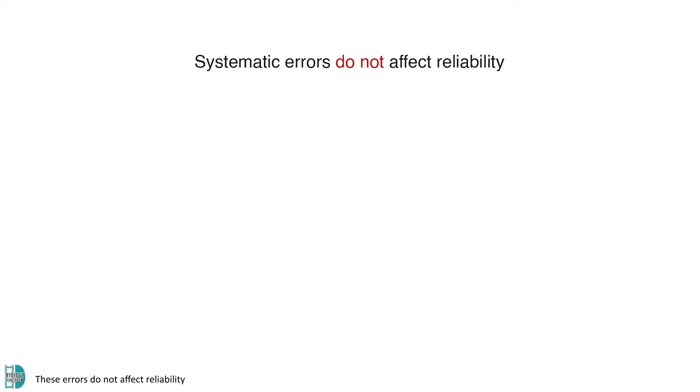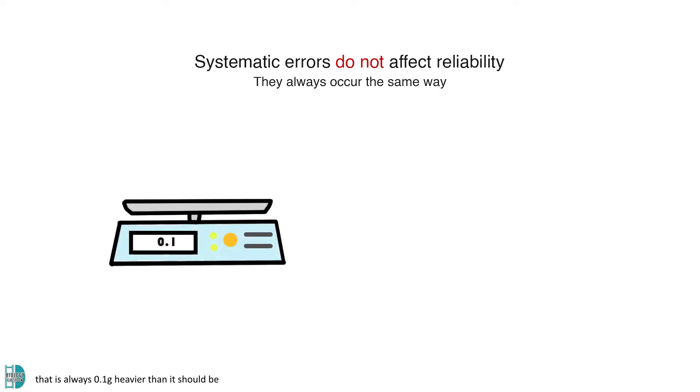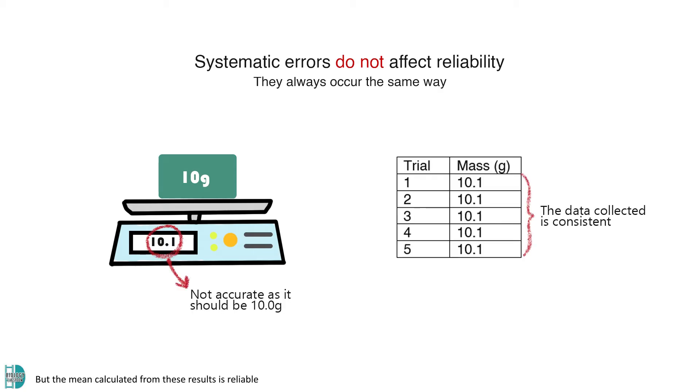These errors do not affect reliability since they always occur the same way. For example, using a weighing scale that is always 0.1 gram heavier than it should be does not give an accurate measurement, but the mean calculated from these results is reliable because it is consistently 0.1 gram heavier.